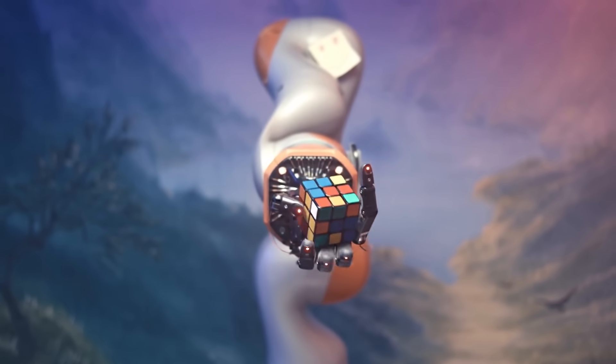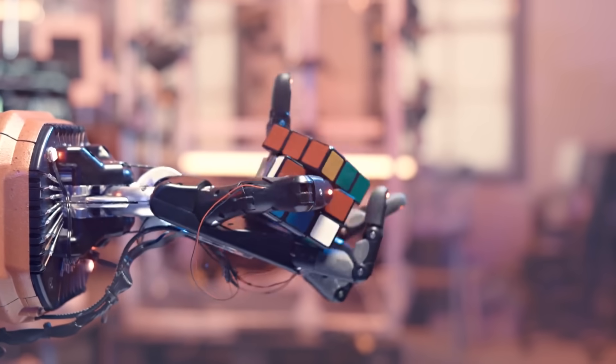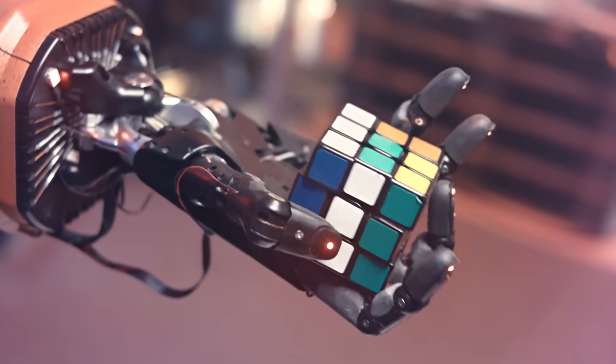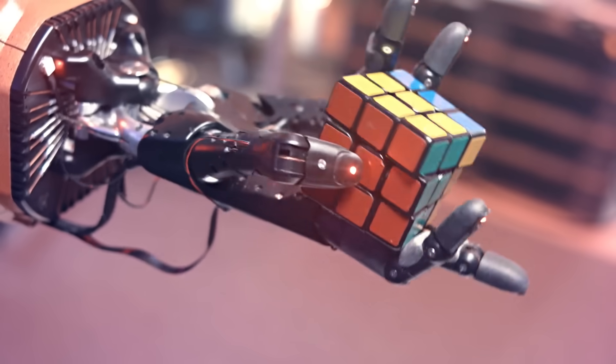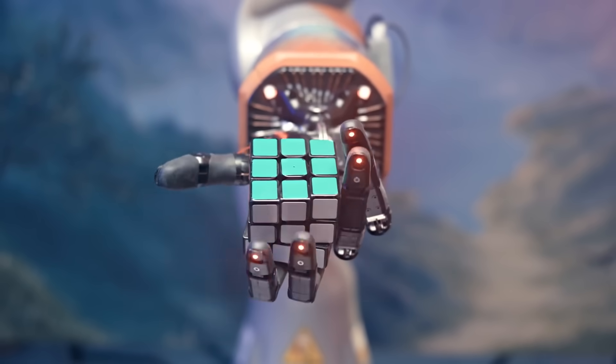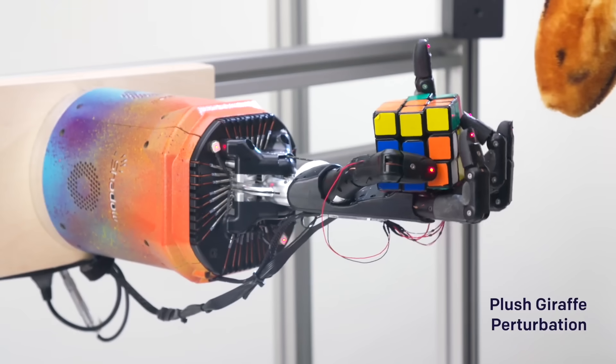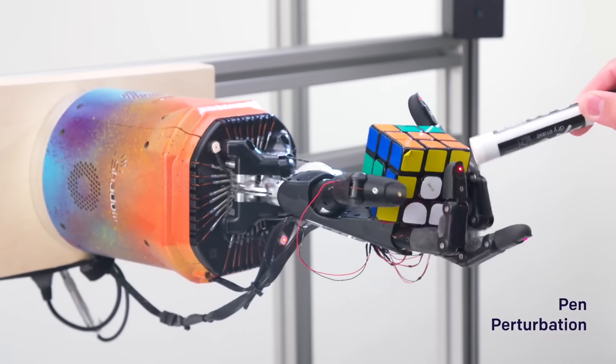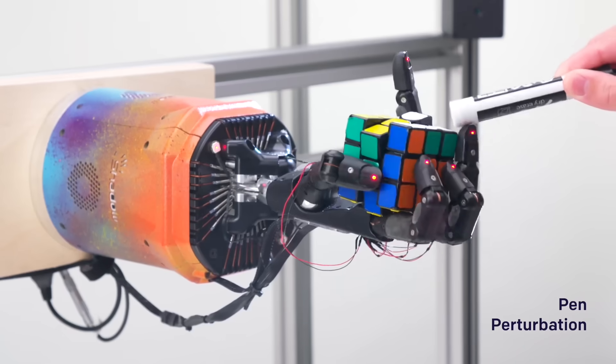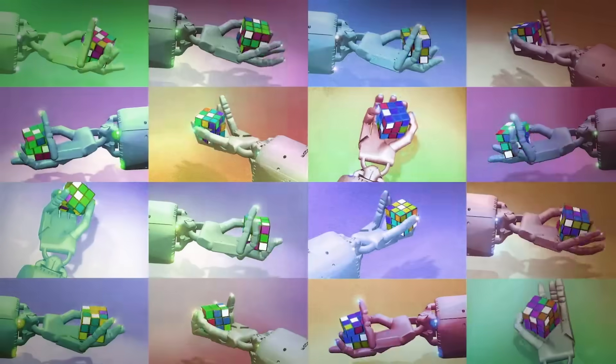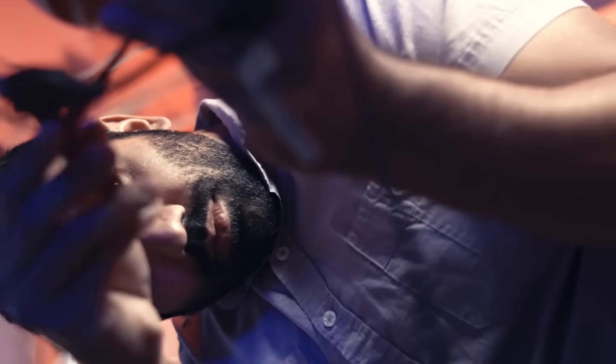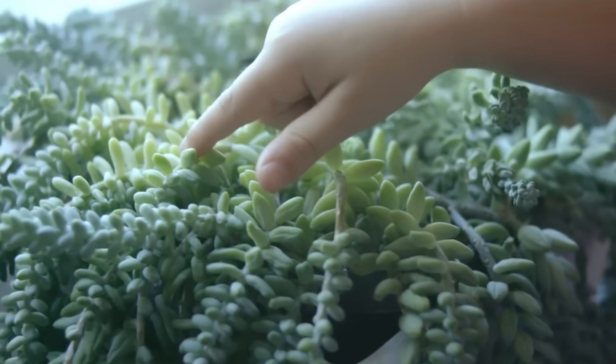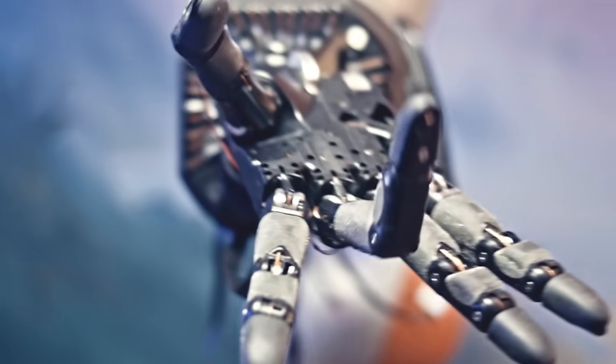Unlike other Rubik's Cube solving robots, this humanoid robotic hand is not designed specifically for solving Rubik's Cube. It is designed for general-purpose self-learning robots. It is called Dactyl. Developed by artificial intelligence research organization OpenAI, Dactyl has learned to solve a Rubik's Cube one-handed. The robotics team at OpenAI is trying to build something that is much more general in its scope, similar to how human hands can do a lot of things, not just a specific task.